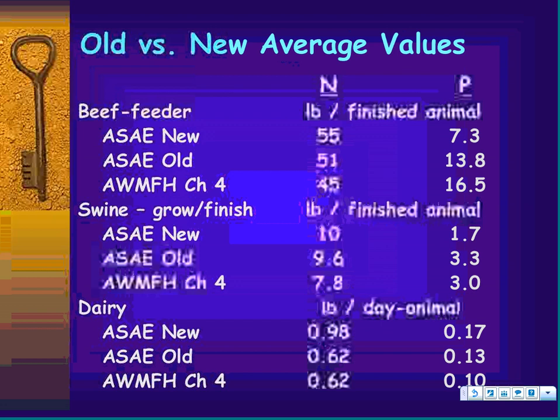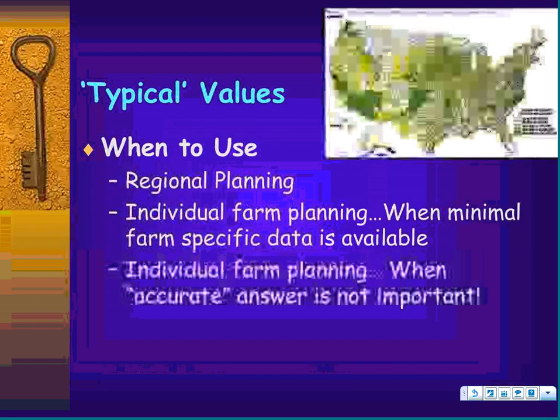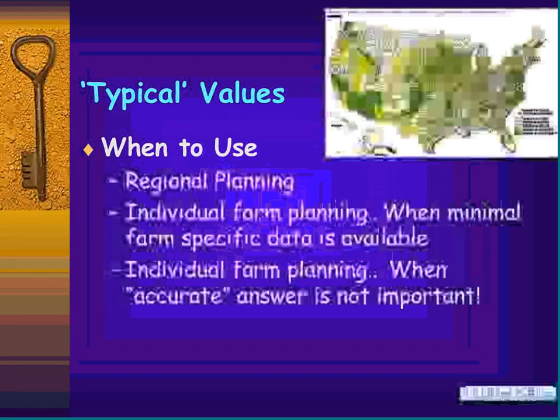A lot of times the phosphorus values declined. One exception was dairy. There is a range around these typical values, and they may not be representative of an individual farm. When you want an accurate answer, using these table values is quite suspect — there is potential for large error around those values.